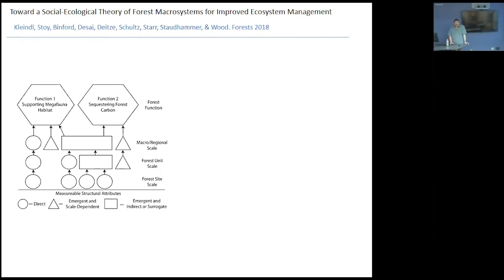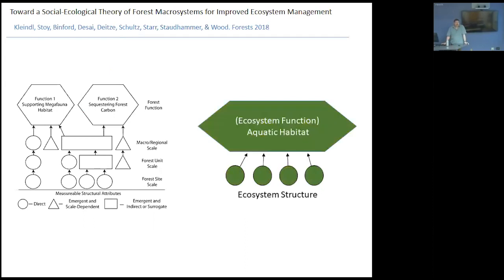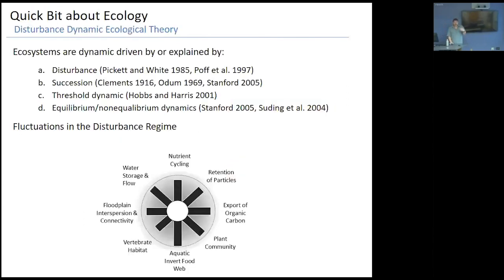The assumption is also that as these structures vary in time — like in the Google Earth time-lapse — ecosystem function should also vary. This isn't necessarily related to human disturbance; the familiar story is that as disturbance increases, the system's capacity to perform functions decreases because of simplification. But we're thinking about what happens in unperturbed systems with natural disturbance regimes — trying to distinguish perturbations from humans from natural disturbance events.